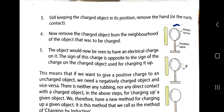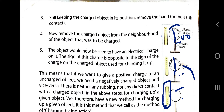Let us review: here is an uncharged object and a charged object. As soon as the charged object is brought close, charge separation occurs. Then earthing is done — the positive charge flows away — and a negative charge develops on the uncharged object. So if we want to induce a positive charge on an object, the inducing object must be negatively charged.